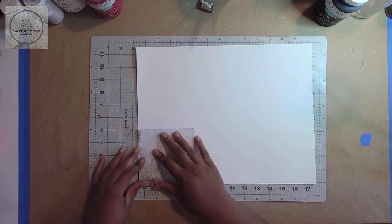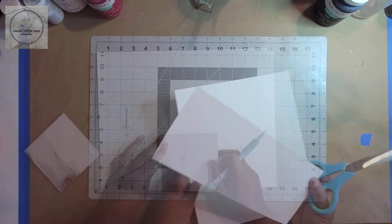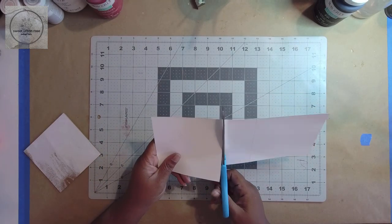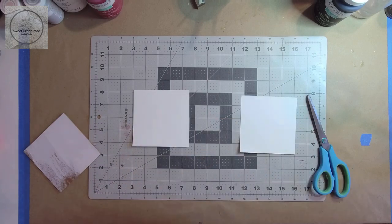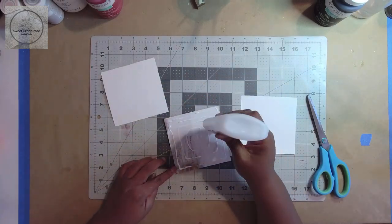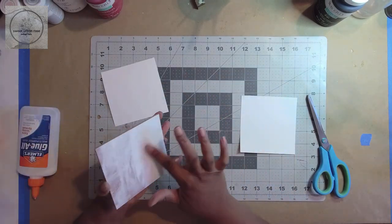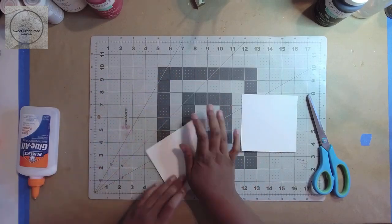I traced the back of the frame two times on a piece of poster board, and cut them out. Next, I glued one piece of the poster board to the back of the frame, where I removed the paper, then set it aside to dry.